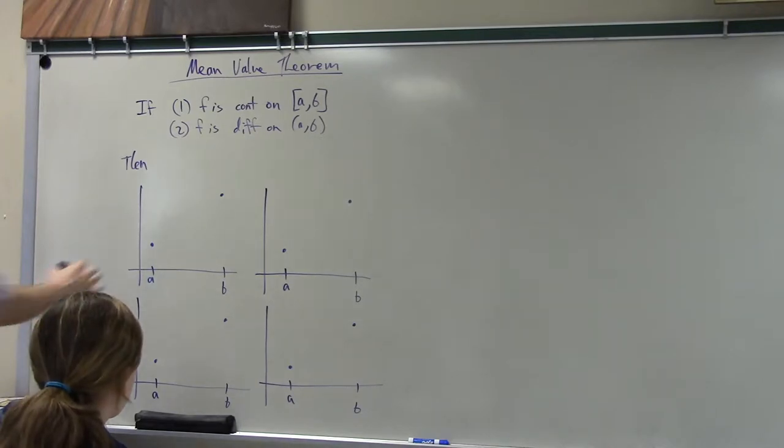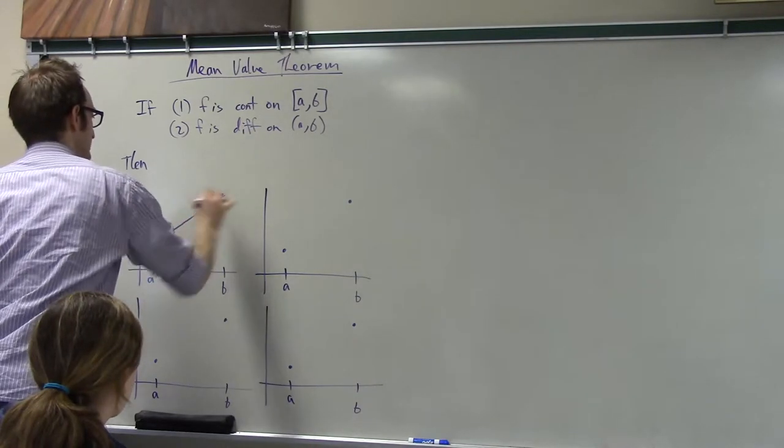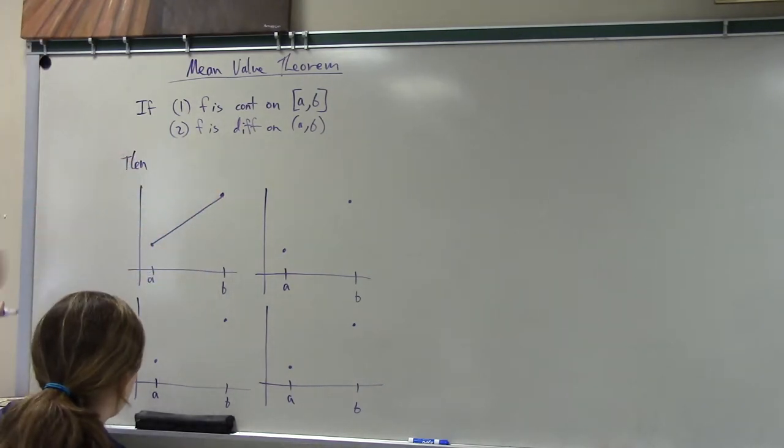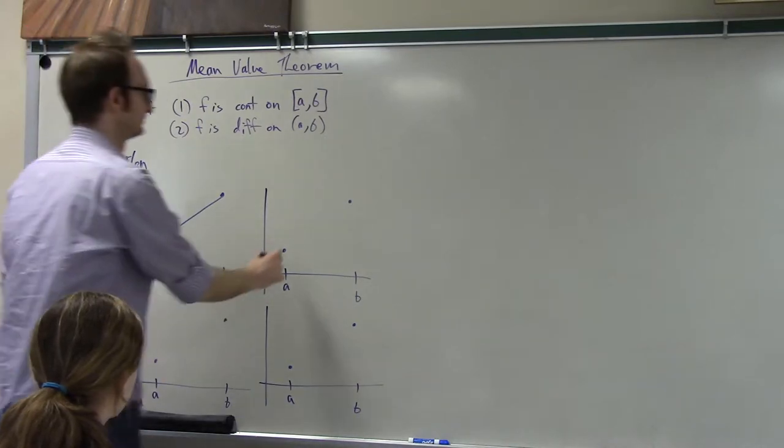It could just be a line. It could just be a line, right? It could just go zero. So, does the derivative have to be zero in this case? No, right here. The derivative's not zero. What's another thing that might happen? It could go like, it could go like up?